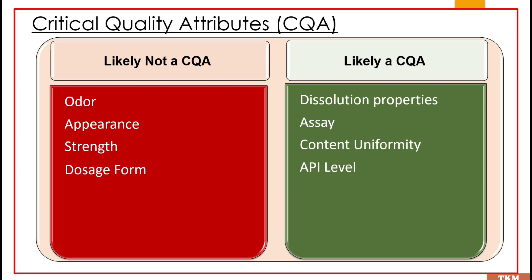Let us understand why. Odor and appearance — if they fall out of a certain range or limit, they are not likely to cause any harm to a patient. However, if the active ingredient level is decreased or increased, or if there is an increase in degradation products, or the dissolution properties of the product change, all of these could potentially impact how the drug works in a patient and could potentially cause harm. That is why all these fall in the category of CQA.